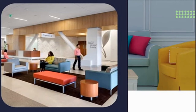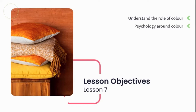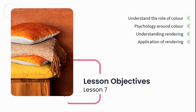You've made it to Lesson 7 of your Professional Diploma in Interior Design. Are you ready to get practical? Our core learning objectives for today's lesson are to understand the role of color — we're going to get a holistic understanding of color applied to interior design — look at the psychology around color and color application, understand rendering, and create our very own hand rendering.